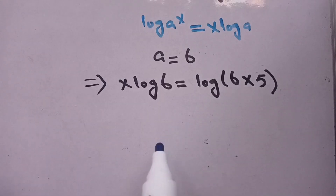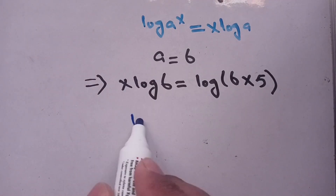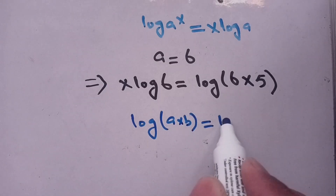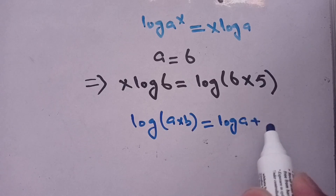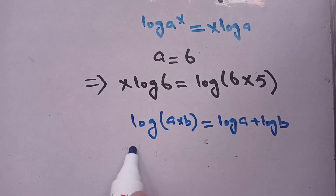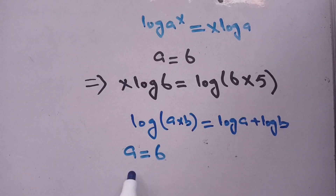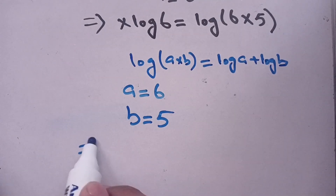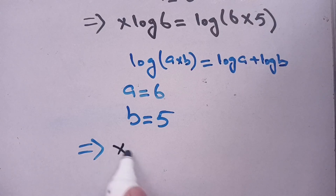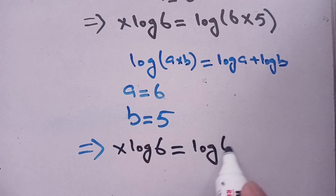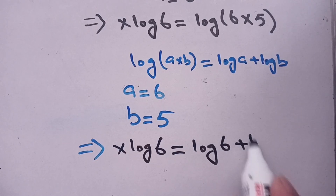In the next step we again use the logarithm property. We know that log of a times b is equal to log of a plus log of b. Here in place of a it is 6 and in place of b it is 5. On using this identity our equation becomes: x times log of 6 is equal to log of 6 plus log of 5.